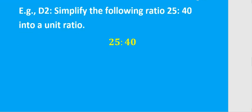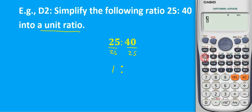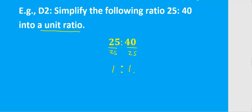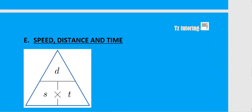You might also be asked to simplify a ratio to a unit ratio, where one side equals 1. Since 25 is the smaller of the two, divide both sides by 25. 25 divided by 25 is 1, and 40 divided by 25 is 1.6. So the unit ratio is 1:1.6. When simplifying to a unit ratio, always divide both numbers by the smaller of the two.